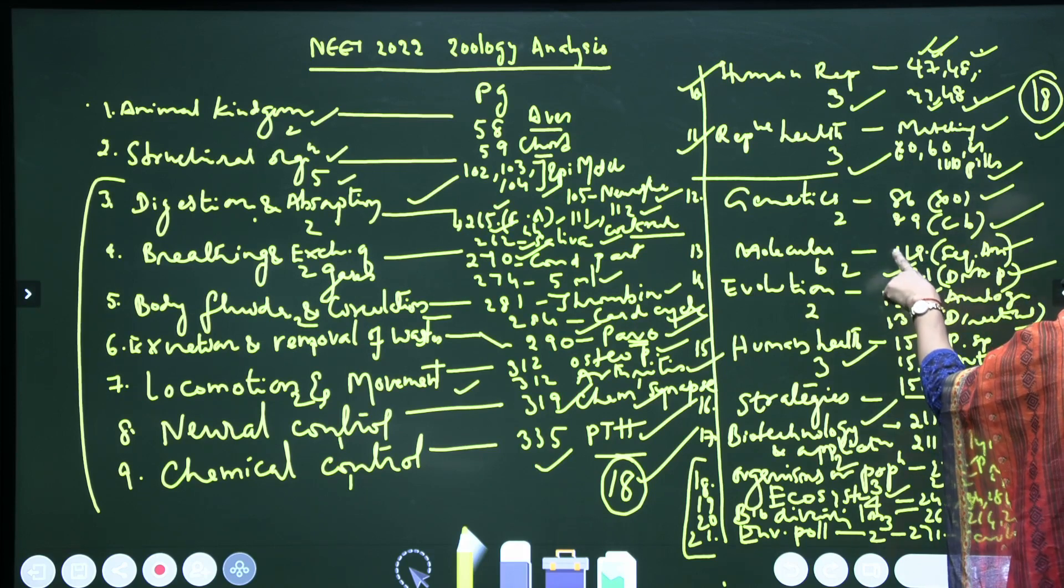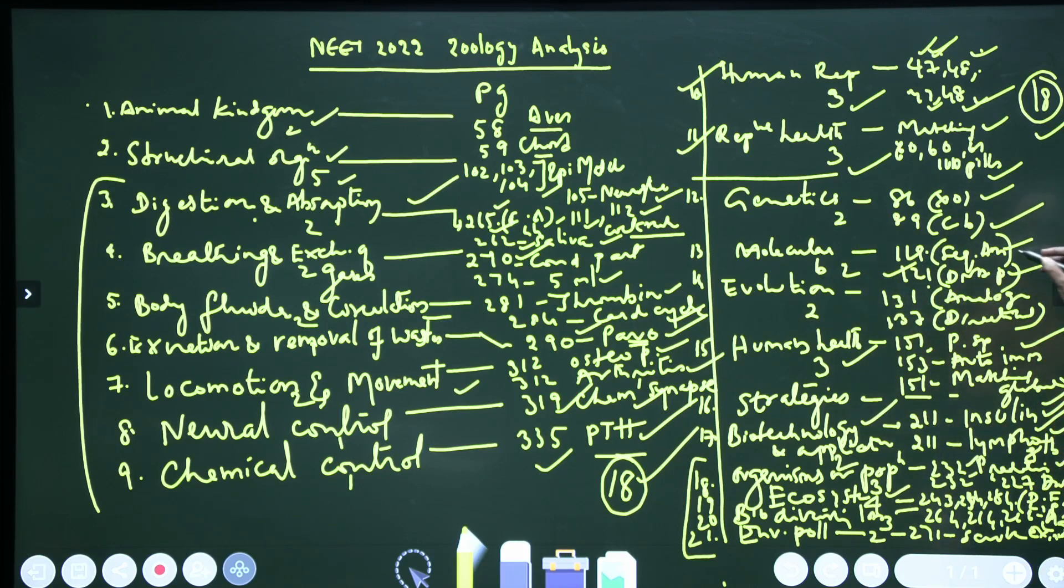Next, Molecular Basis of Inheritance. We got on pages 111 and 121: sequence annotations - assigning the function to the DNA. And next, are nucleotides or genes, DNA polymorphism, which is very important for gene mapping and DNA fingerprinting. That question is given very easy, directly from NCERT.